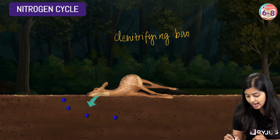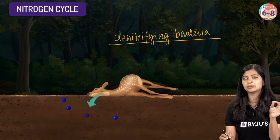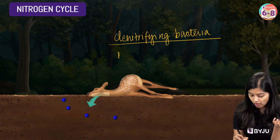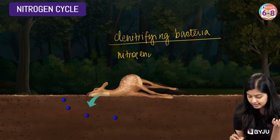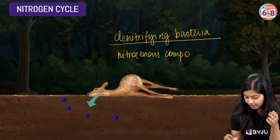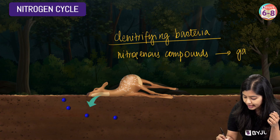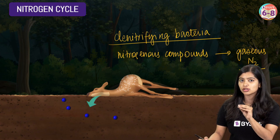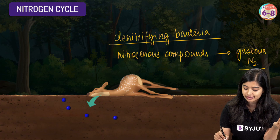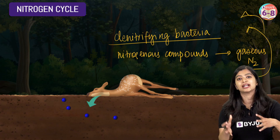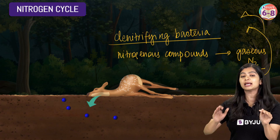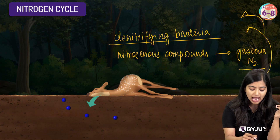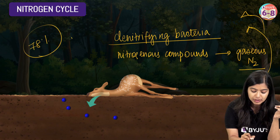Denitrifying bacteria have a very simple role to play — they act on these nitrogenous compounds and convert them back into gaseous nitrogen. This means that through a series of steps, what started out as gaseous nitrogen is now given back to the atmosphere. That is why we call it a cyclic process: nitrogen is constantly being utilized, but gaseous nitrogen is given back, and that 78% level gets maintained.